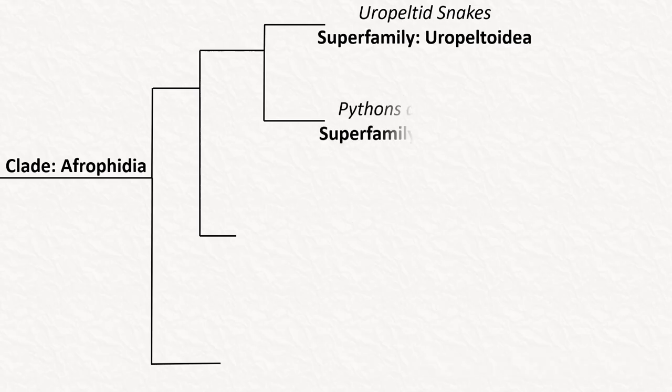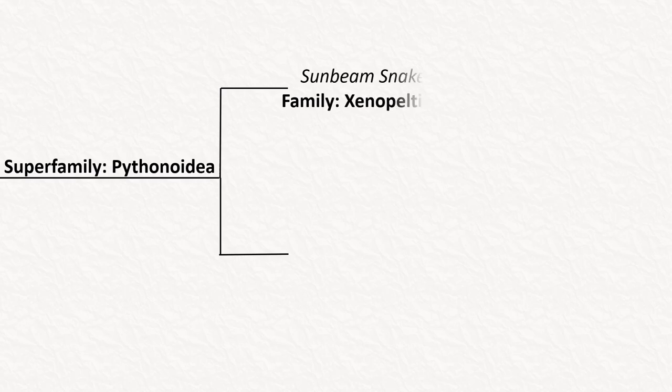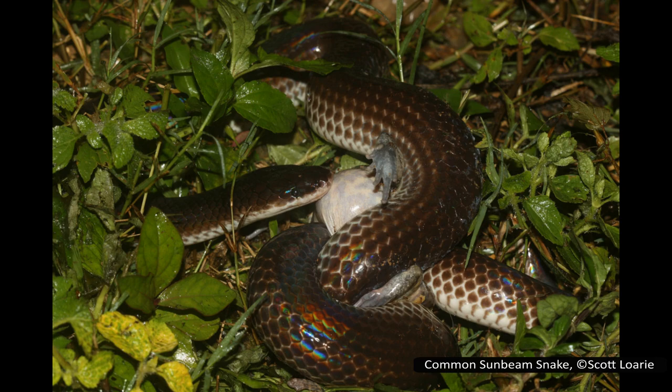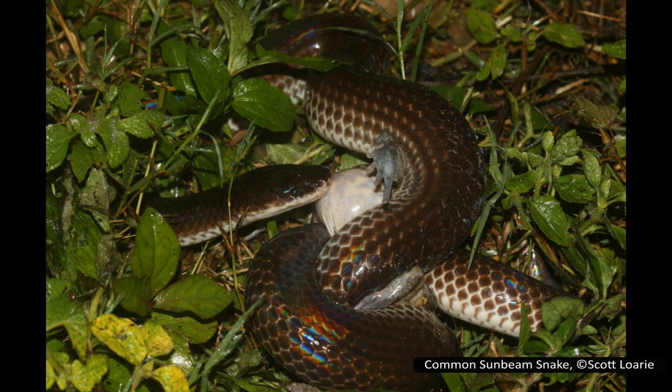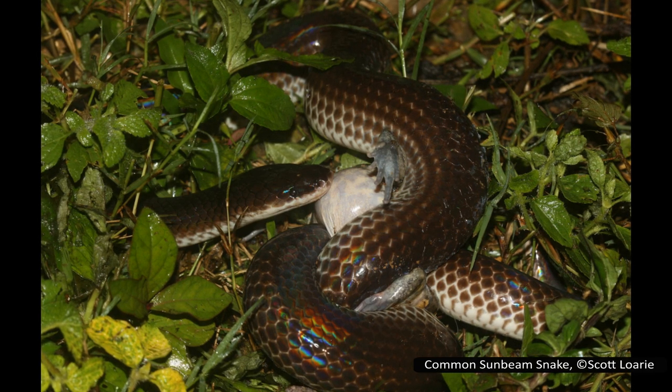The next superfamily in Afrophidia is Pythonoidea — which, as the name suggests, contains the pythons and their closest relatives. The first family is Xenopeltidae, or the sunbeam snakes, with one genus and three species found in Southeast Asia, known for their highly iridescent scales. Like many of the other snakes discussed, they are fossorial and rarely seen. They are not venomous and kill their prey using constriction, typically emerging at dusk to hunt for frogs, snakes, and small mammals.